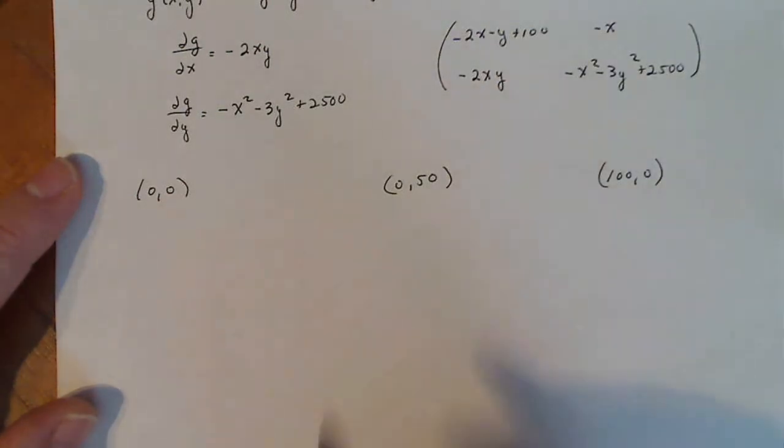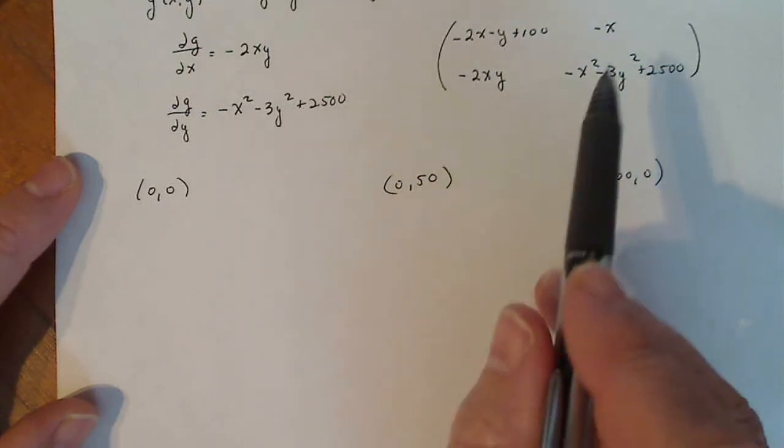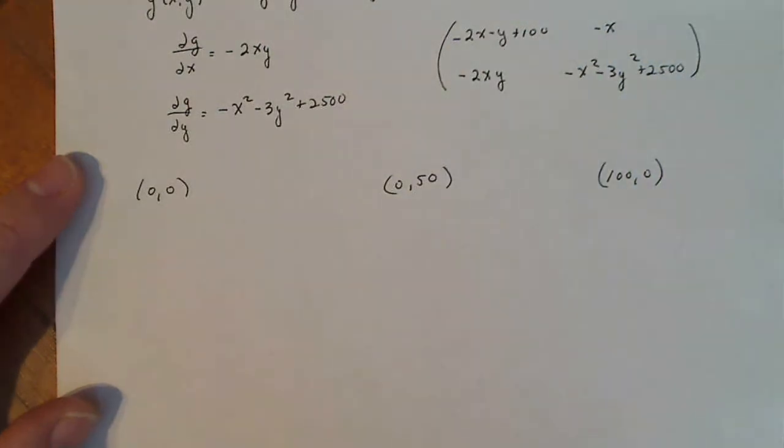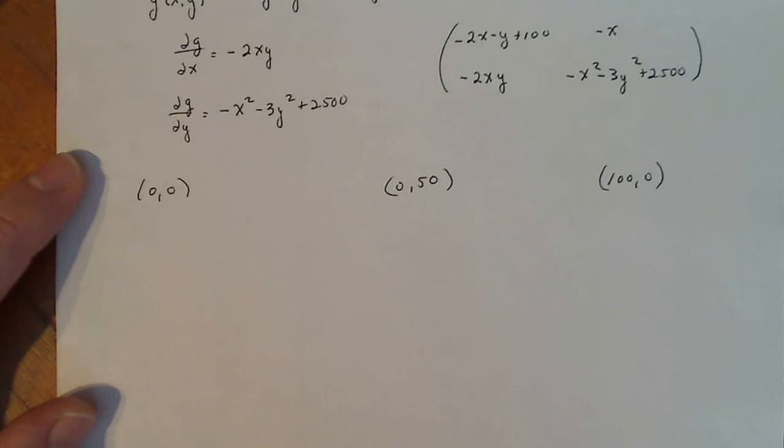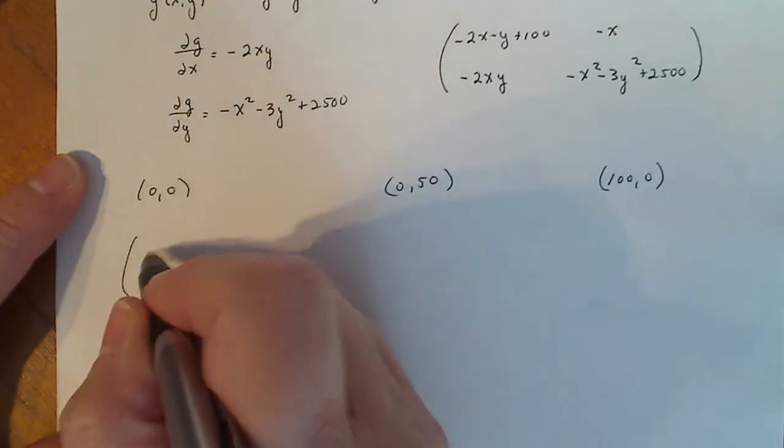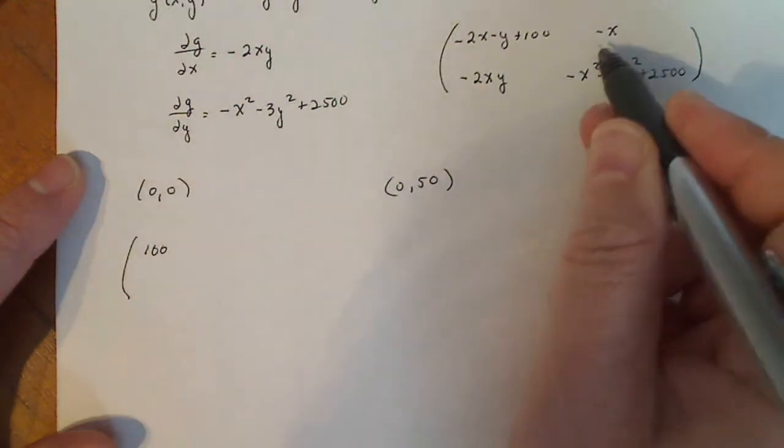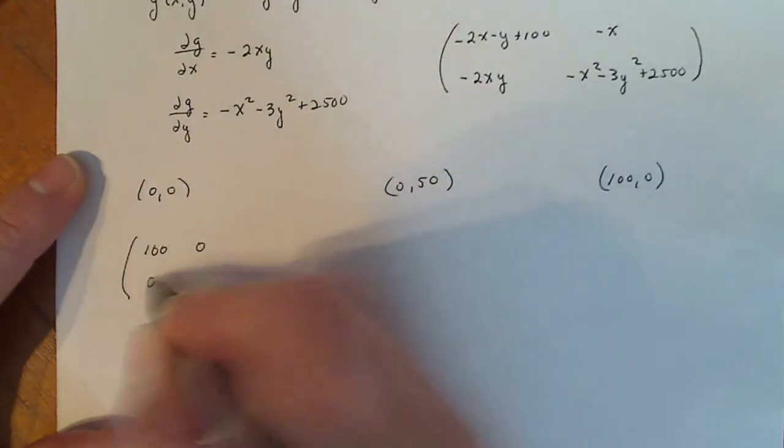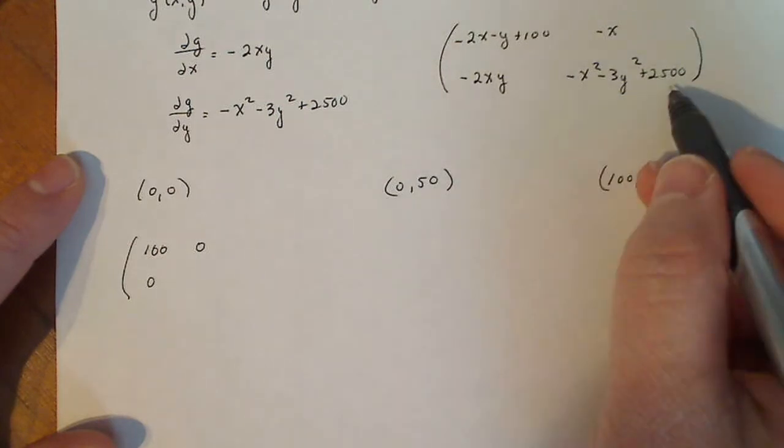Now this is a plug and chug game. I'm just going to plug these numbers in here and see what I get out and then go ahead and do my A minus lambda I. For (0,0), I plug in 0 for X and 0 for Y. I get 100. I get 0. I get 0. And here I get 2,500.